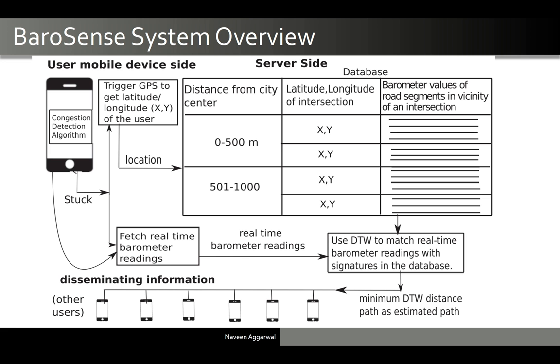Our main algorithm will run on the commuter smartphone, the congestion detection algorithm, where we have proposed a feature set for activity recognition to detect the stuck state with very high accuracy.